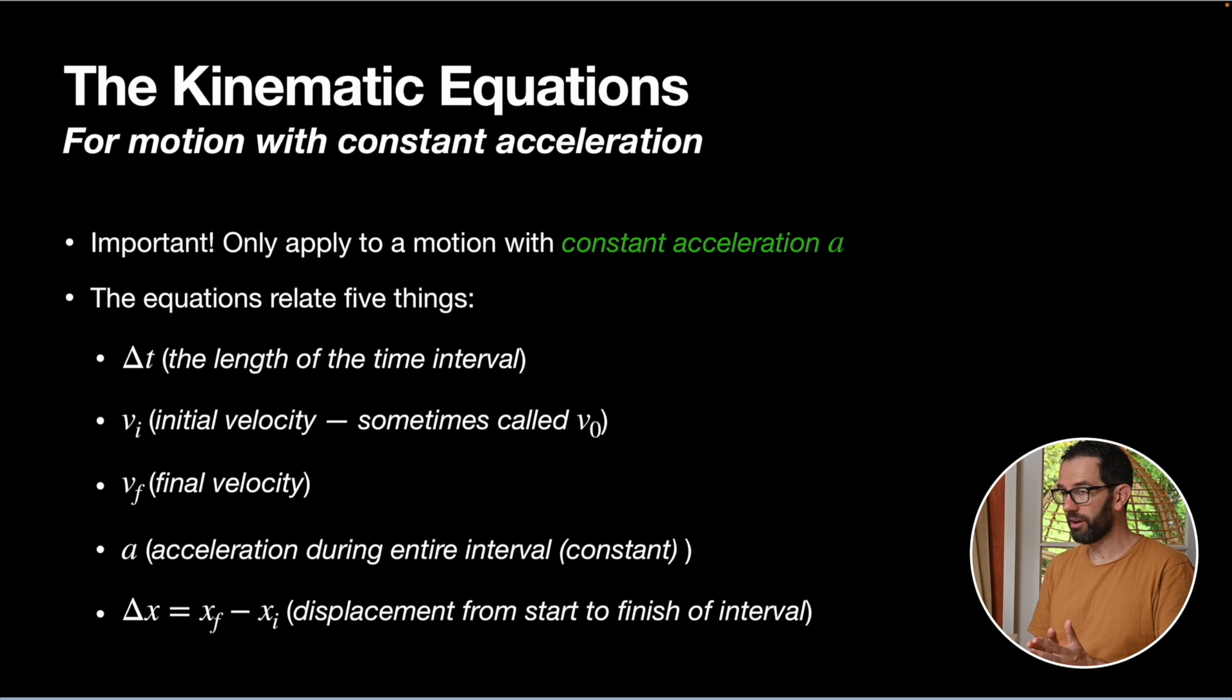So there are five quantities that are related in the kinematic equations. The first one is the length of time, Δt. The second one is the velocity at the start of the motion. The third one is the velocity at the end of the motion. And because we know acceleration is constant, the velocity will just increase in a straight line from start to finish. The fourth one is the acceleration, which is a constant for that whole motion. And finally, the displacement is Δx, which is the displacement over the duration of that motion.